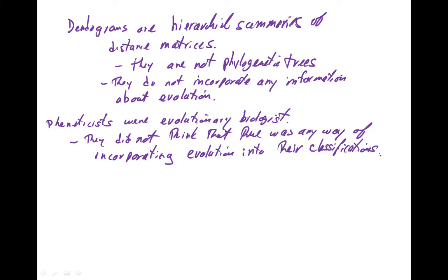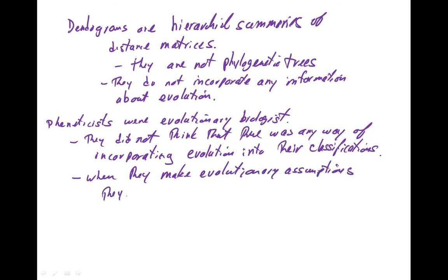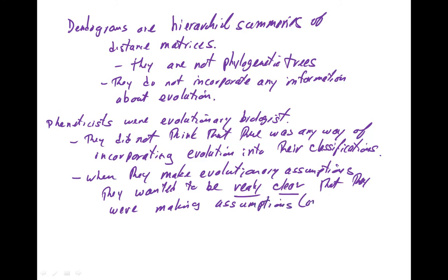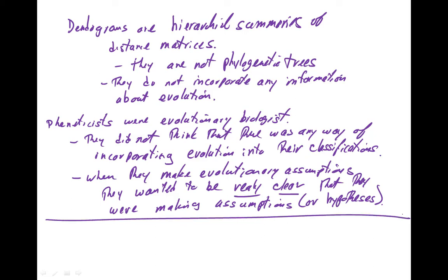It was a failing on the pheneticists' part that they didn't figure out how to incorporate evolution. They still wanted to say something about evolution — we'll come back to how they incorporated it after they made their classification. What's going to be really important to them is that when they say something about evolution, their assumptions are really clear and out in front. This completes our work on fundamental principle number three.